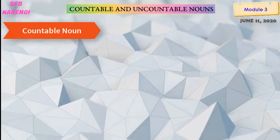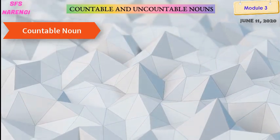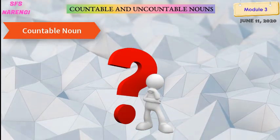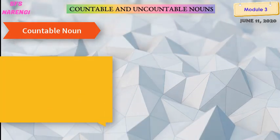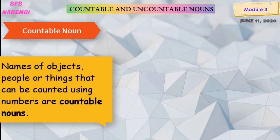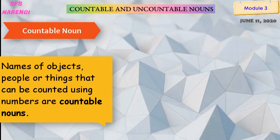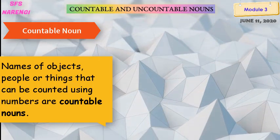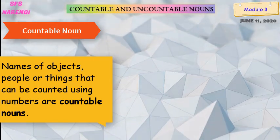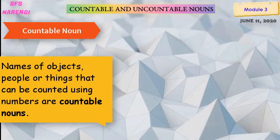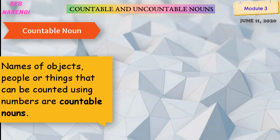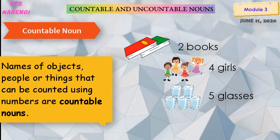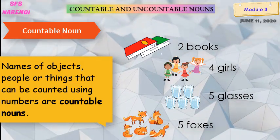As you heard the word 'countable,' you might think it is related to counting — and you are right! Countable nouns are the names of objects, people, or things that can be counted using numbers. This means we can put a number before those objects, people, or things. For example: two books, four girls, five glasses, five foxes.